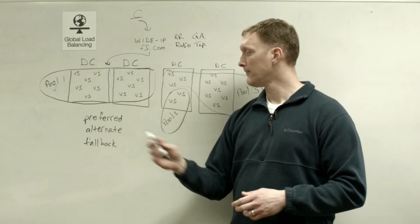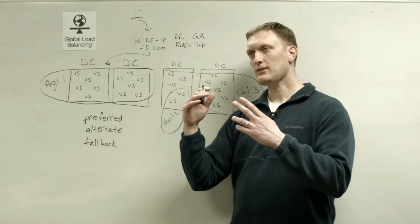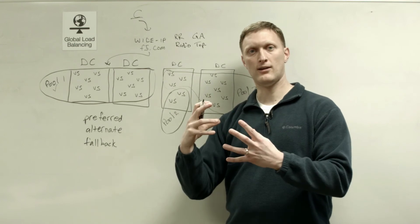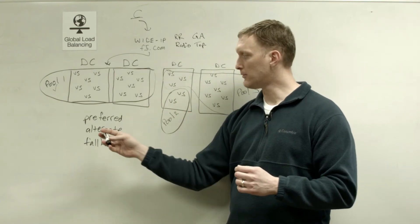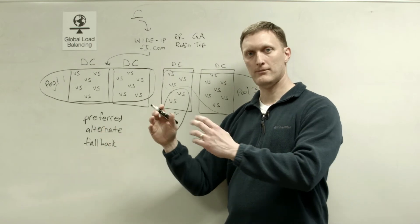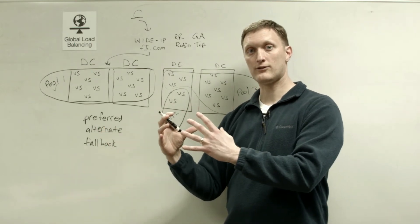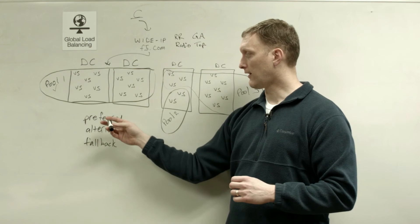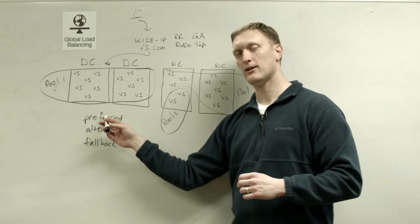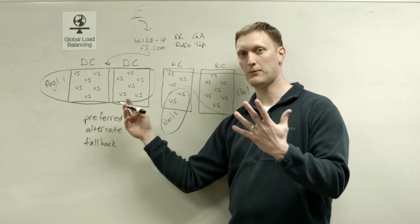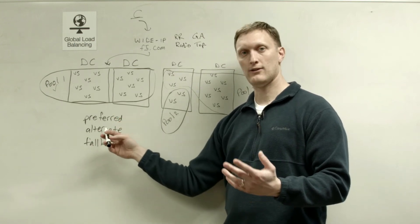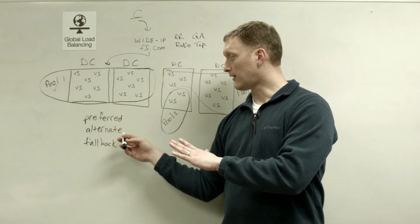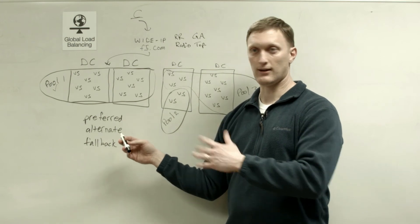And then again, if the alternate is not available, then of course, you go to the fallback. The alternate, by the way, some of the client based statistics load balancing options are not available at the alternate as an option at the alternate level, mainly because obviously, if you're at the alternate level, it's because your preferred option has not worked for some reason. And so this is a little bit more limited. There are limits on what you can select at the alternate option.